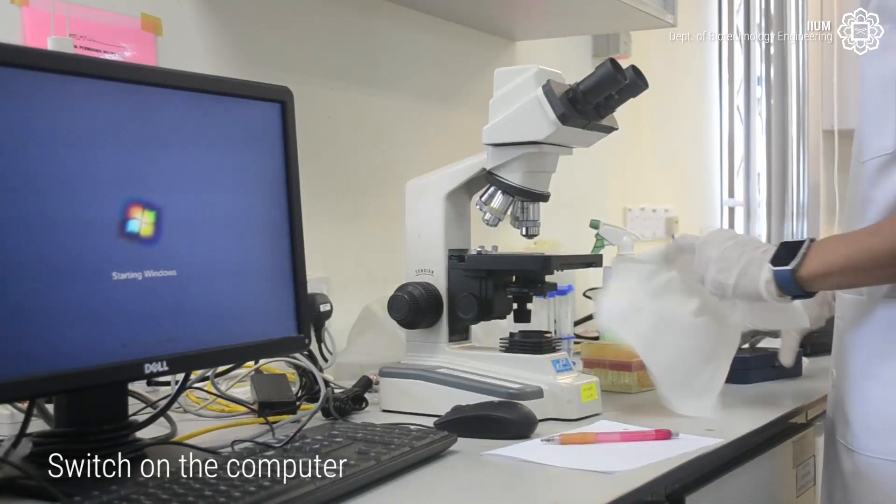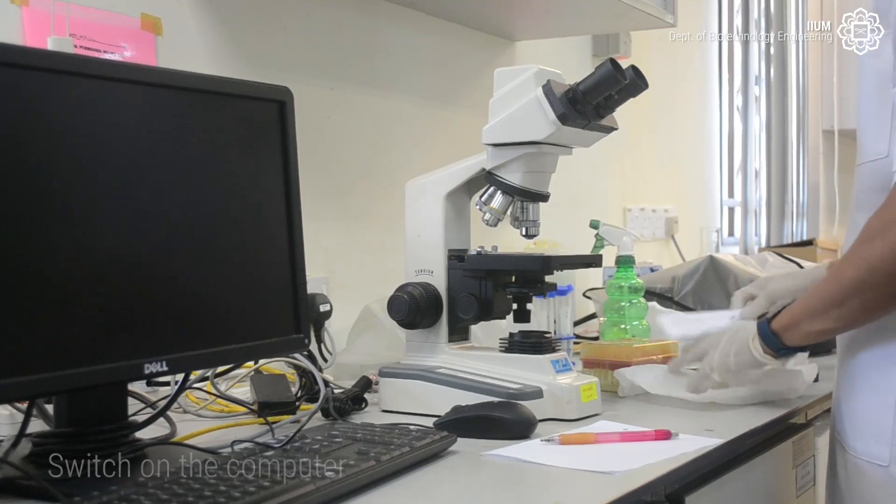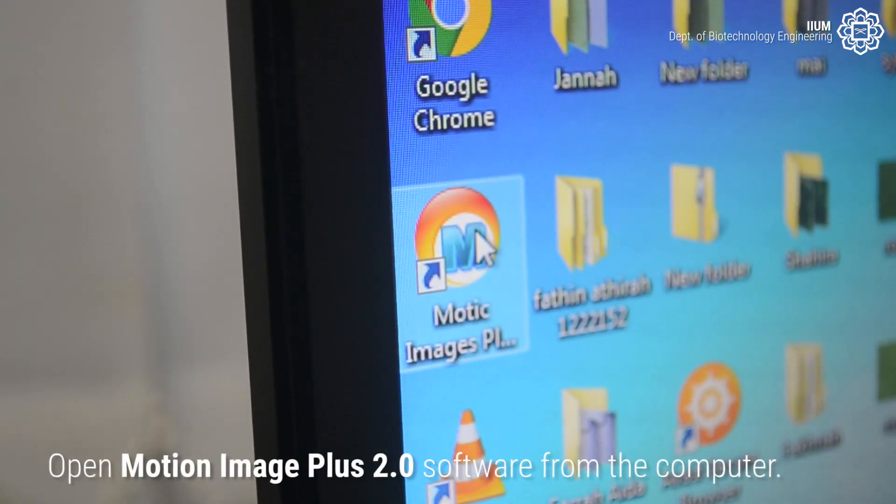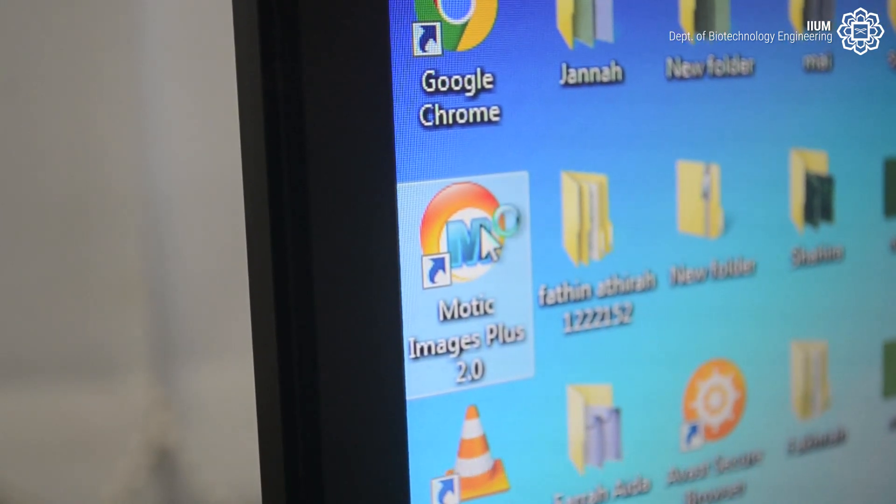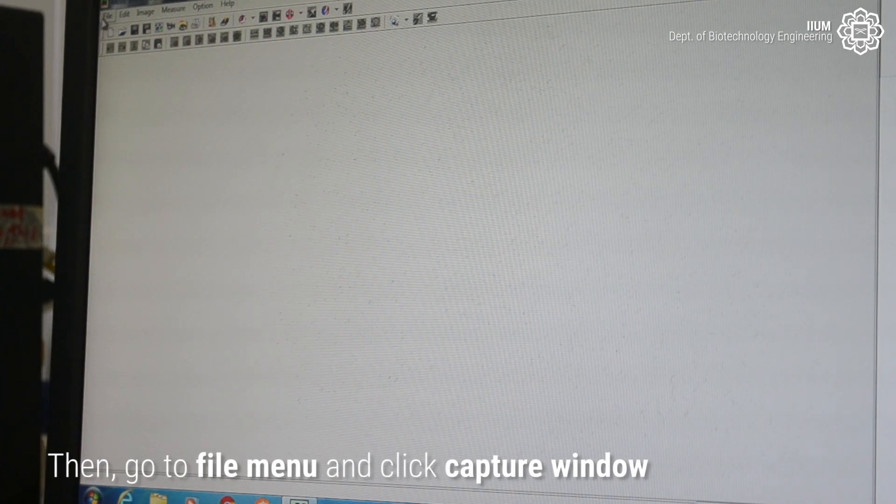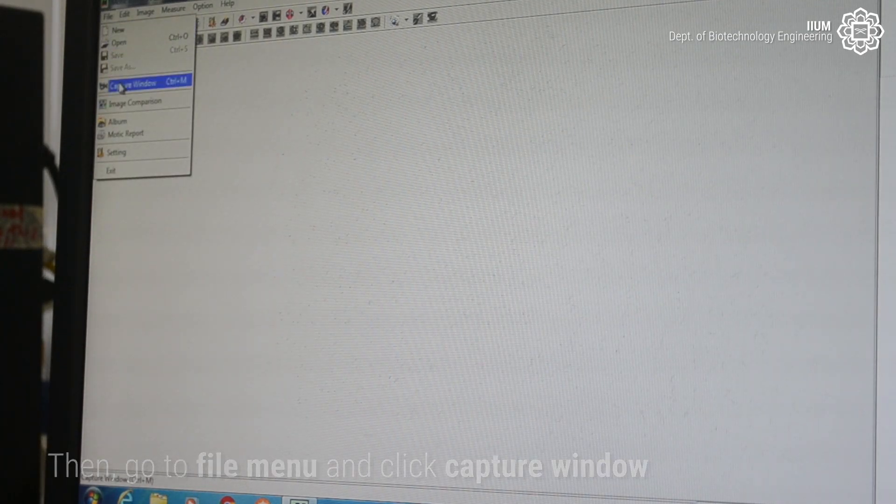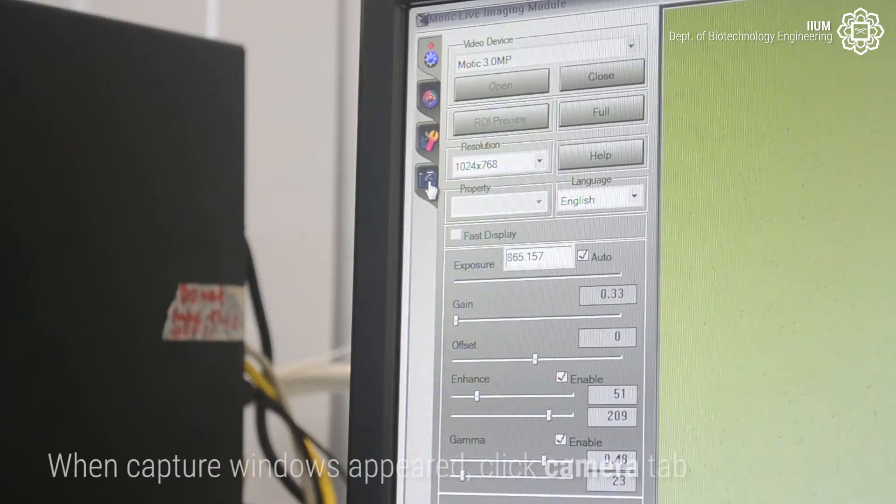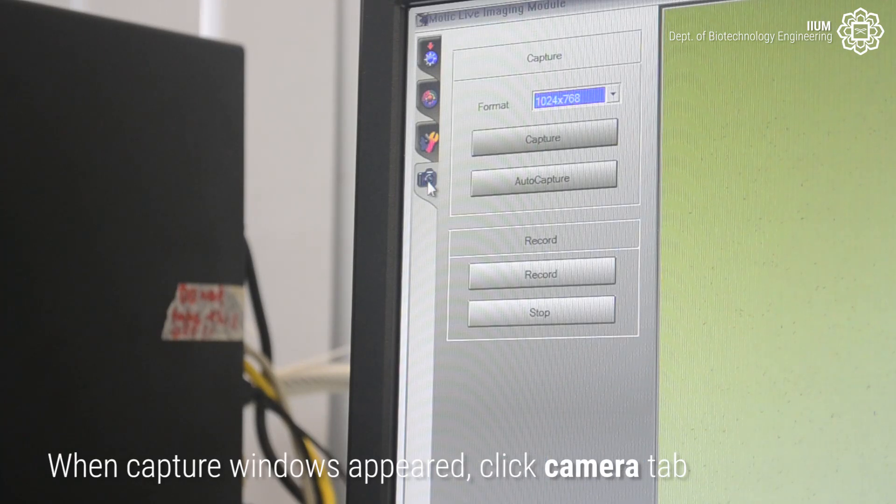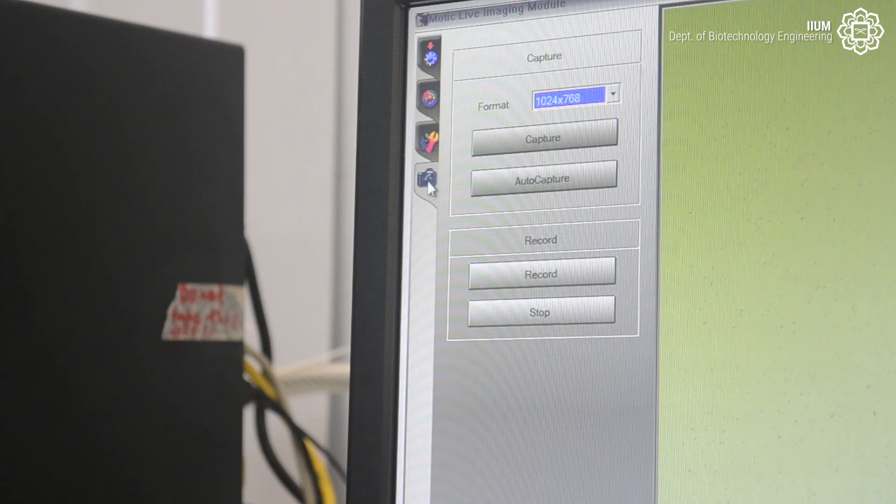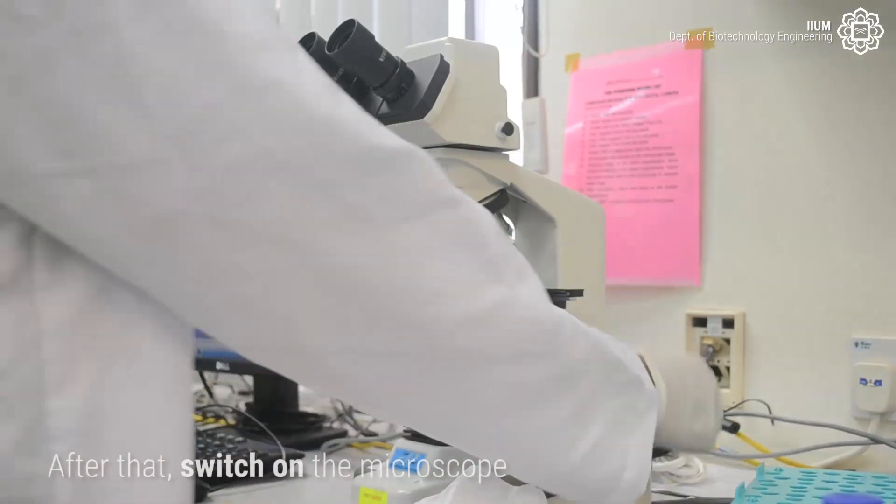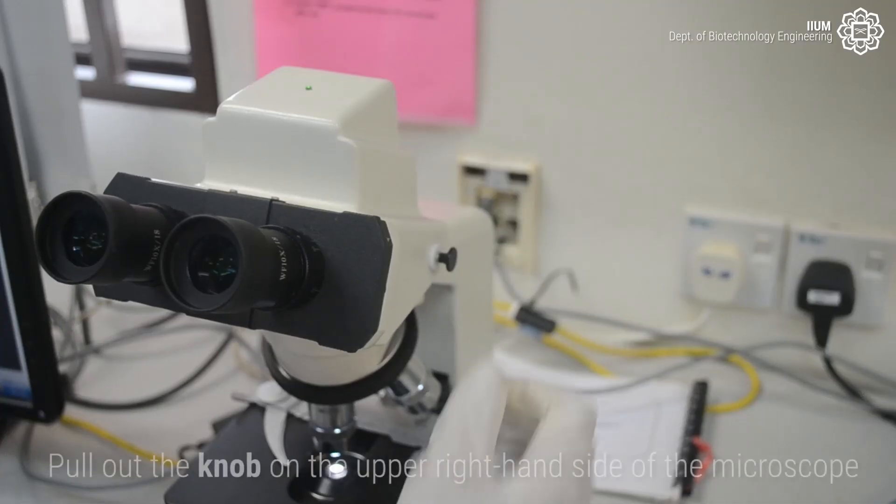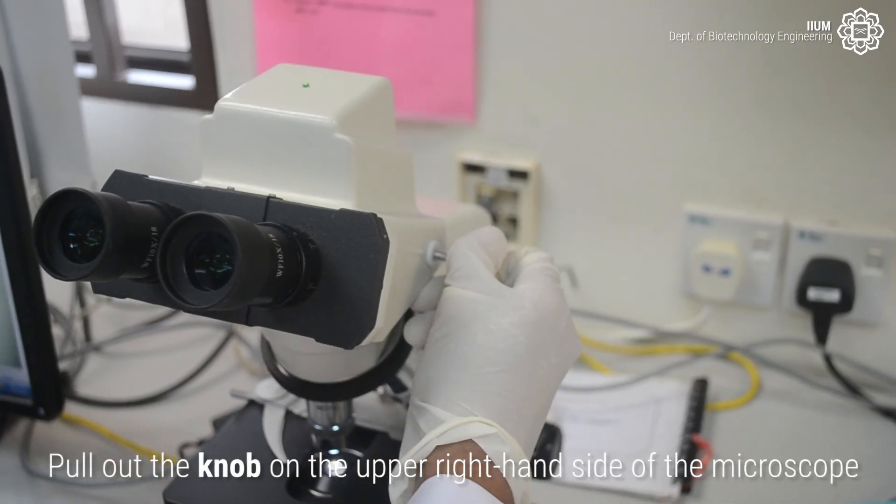Switch on the computer. Open MotionImage Plus 2.0 software from the computer. Then go to File menu and click Capture Windows. When Capture Windows appeared, click Camera tabs. After that, switch on the microscope. Pull out the knob on the upper right-hand side of the microscope.